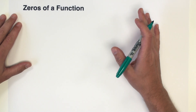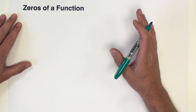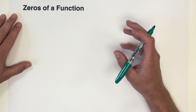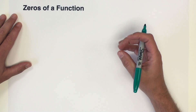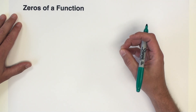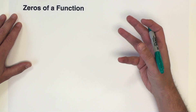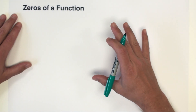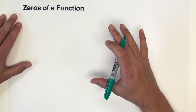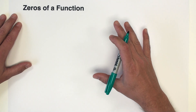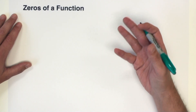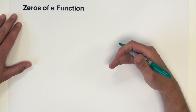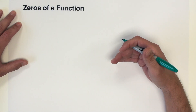Before we start talking about solving quadratic equations, we're going to look at a larger problem which is finding zeros of a function — in this case, of a quadratic function. Let's go over what the definition of a zero is, and then we'll move into finding them and having that lead us to solving quadratic equations.